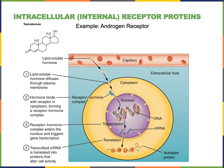Lipid-soluble hormones are able to diffuse through the plasma membrane. So lipid-soluble hormones will bind to intracellular receptor proteins, forming the receptor-hormone complex. Then the receptor-hormone complex can function as a transcription factor in the nucleus to stimulate gene transcription, and the resulting messenger RNAs can then be translated, forming new proteins that will affect the activity of the cell.